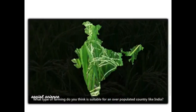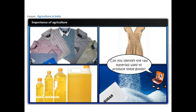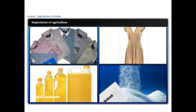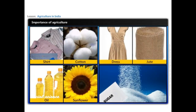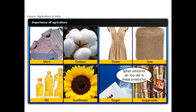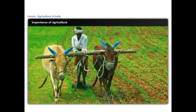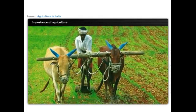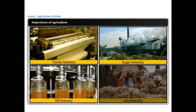Do you think this is suitable for an overpopulated country like India? If we look at the raw materials used to produce these goods — the shirt is made of cotton, the dress is made of jute, the oil is produced from sunflower, and the sugar is produced from sugarcane. The raw materials used for all these goods are agricultural products. Thus, agriculture not only provides food but also provides raw materials for manufacturing industries like textiles, sugar, vegetable oil, jute, and tea.